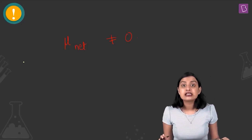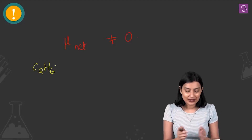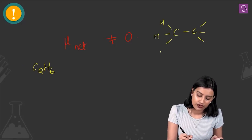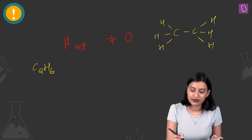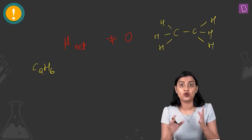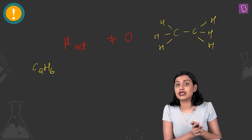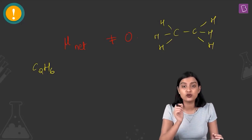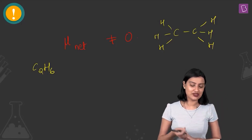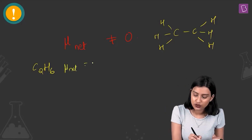For C2H6 (ethane), carbon and hydrogen have a very low electronegativity difference, and the molecule is symmetrical. The individual bond moments cancel out through vector addition, giving μ_net = 0, so ethane is non-polar.